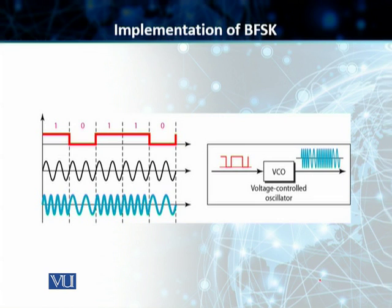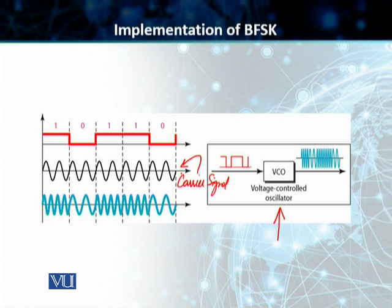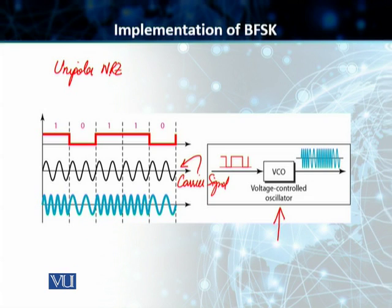Now we will go through the implementation of binary FSK. In this case, what you are looking at is that we have implemented the binary frequency shift scheme by using a voltage-controlled oscillator, VCO. The VCO generates our carrier signal, as you can see here. We have got a unipolar NRZ, and we feed this unipolar NRZ into our voltage-controlled oscillator. What happens is, the input, which is a unipolar NRZ signal, when it goes into the VCO, where the amplitude of NRZ is 0, the oscillator keeps its original frequency.